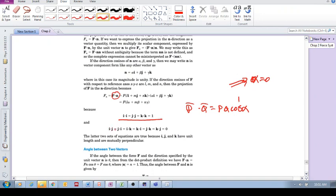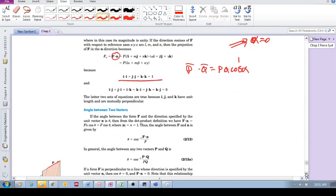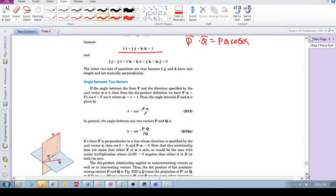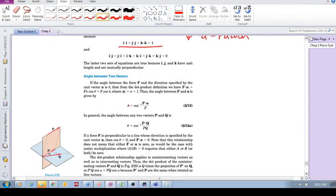Anytime you've got two unit vectors that are perpendicular, like i and j, j and i, etc., then you're going to have cosine of 90, which is zero.